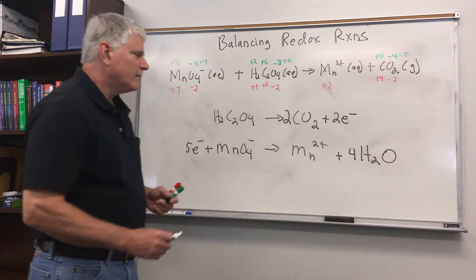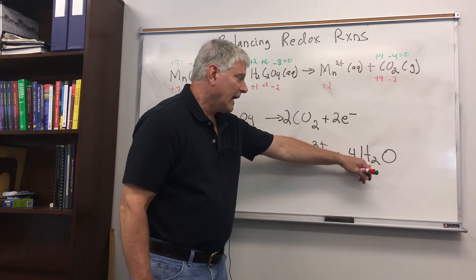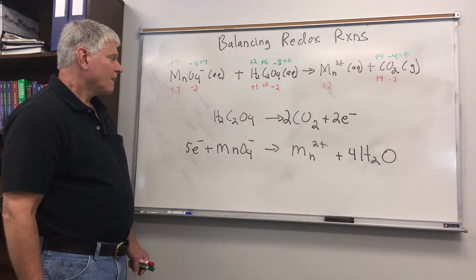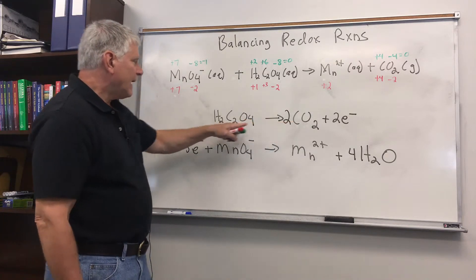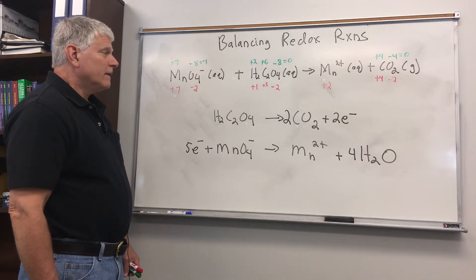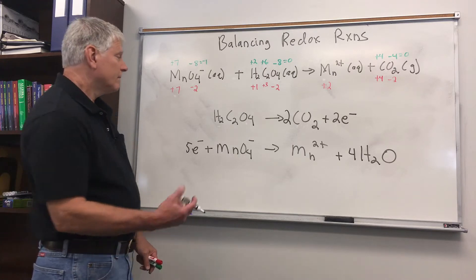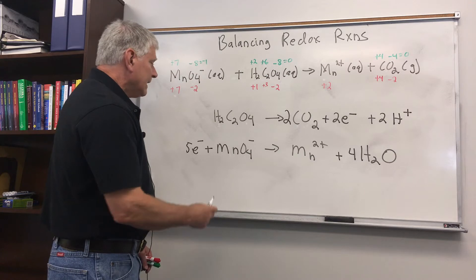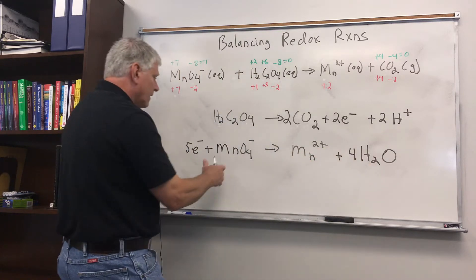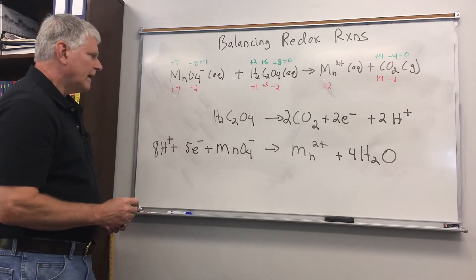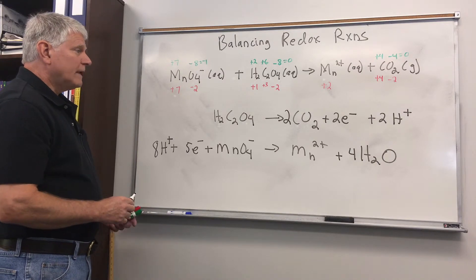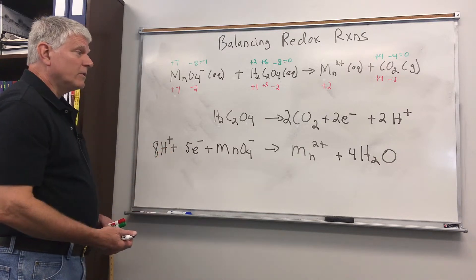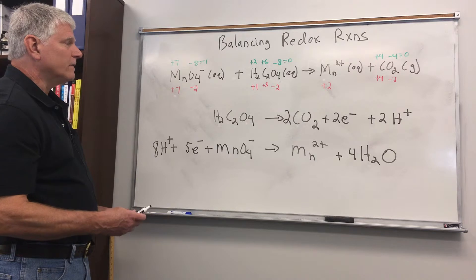Adding water also adds hydrogens, but I'll balance hydrogens last. Now everything is balanced in these equations except for the hydrogen atoms. We balance hydrogens by adding H+. In the oxidation half reaction, we have 2 hydrogens on the left and need 2 on the right. In the reduction half reaction, we have 8 hydrogens on the right and none on the left, so we need 8 H+ on the left. For an acidic solution we leave the H+ as is, but in basic solution we'd add OH- to counteract the H+.